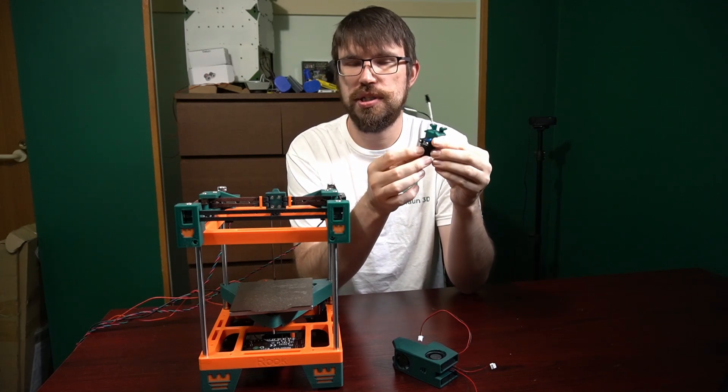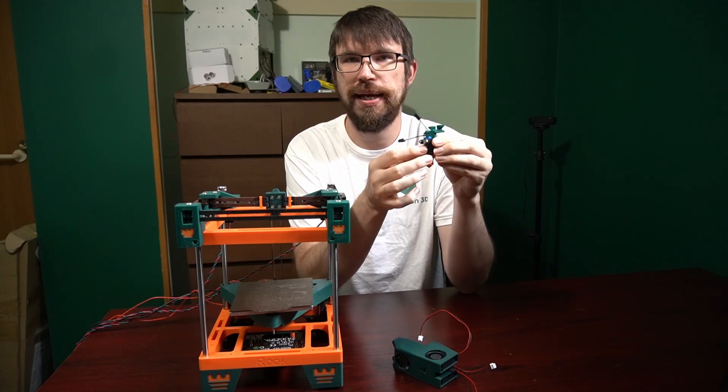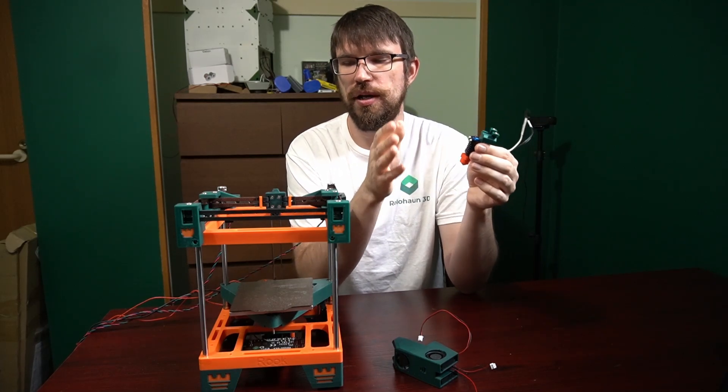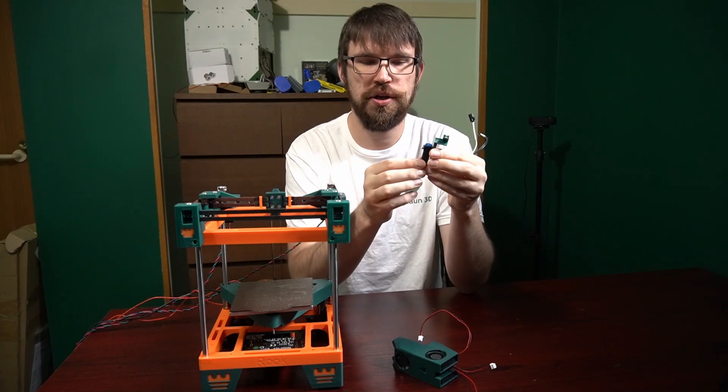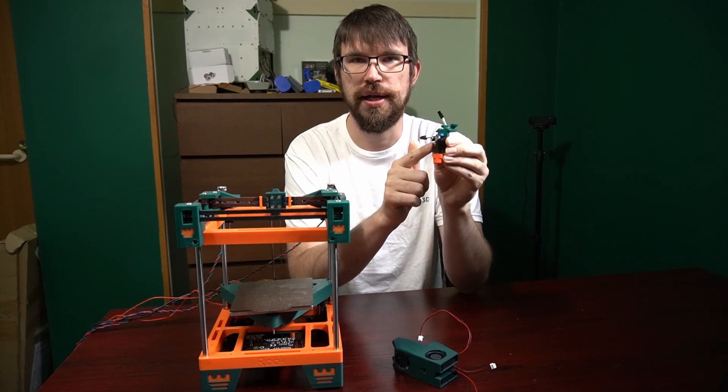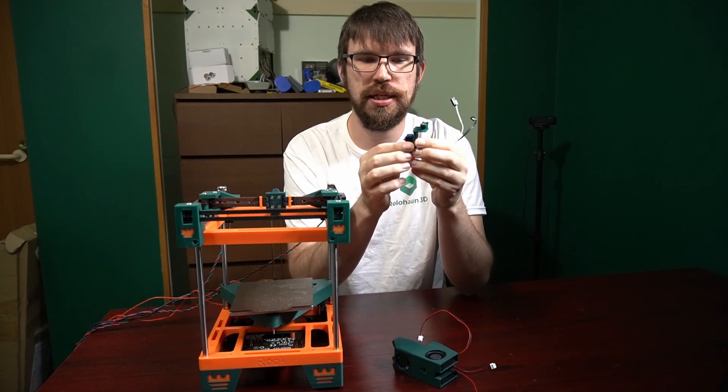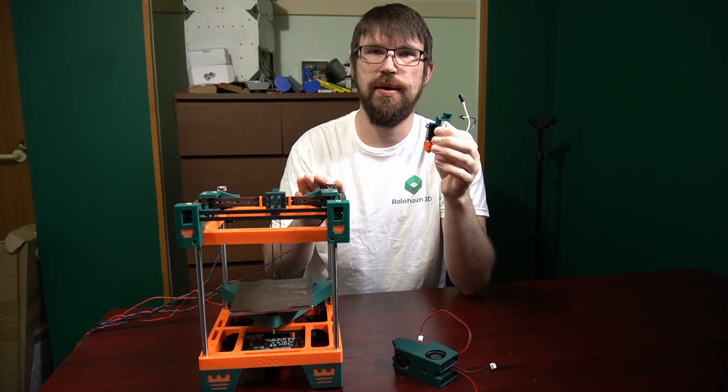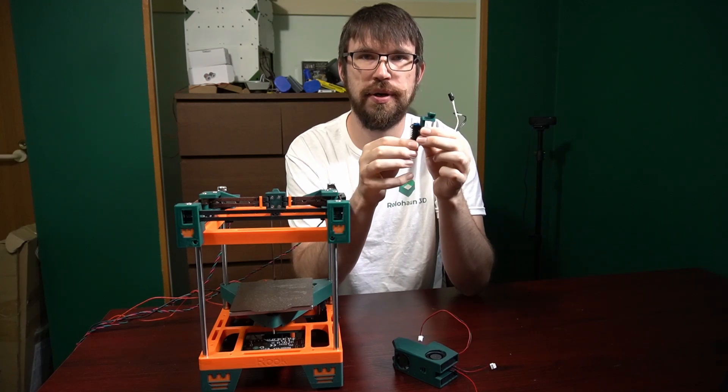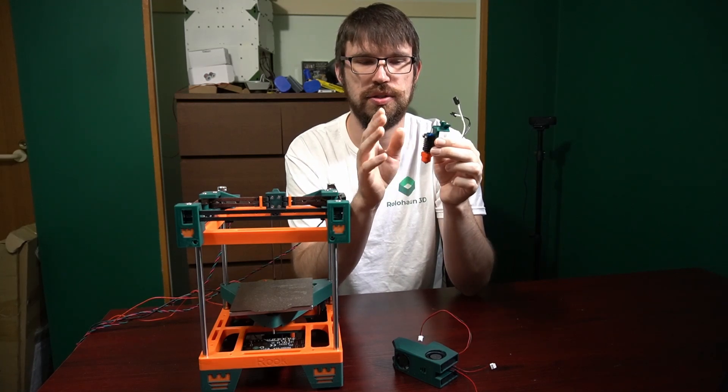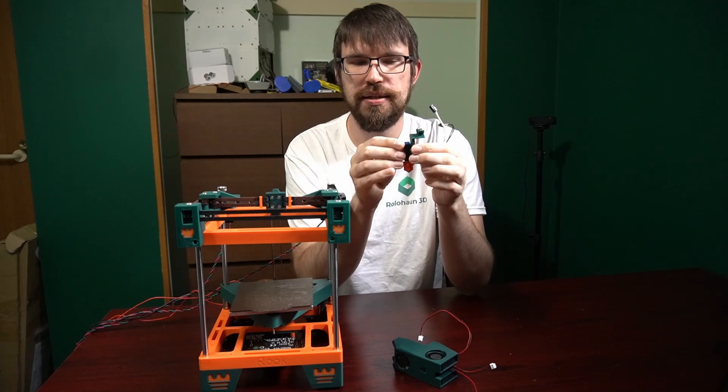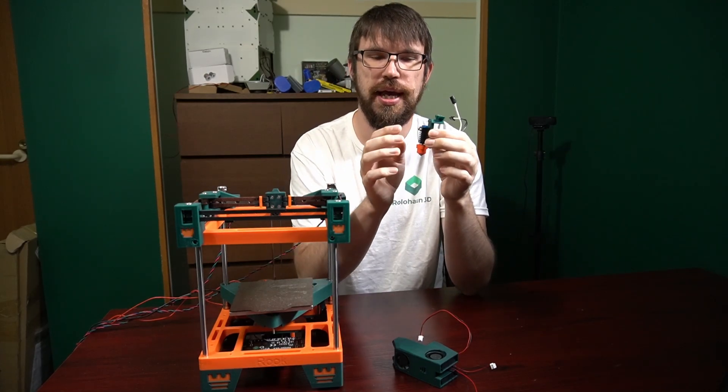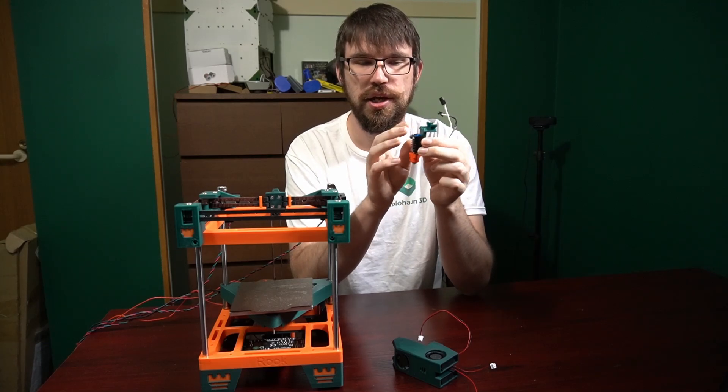Now this is very important that you get the right key for your build. If you are using a Fabrico kit like this or you're using a CR-10 hot end, you're actually going to be using the key that is on the Printables for the Rook MK1. This has the correct height for a CR-10 hot end. So again, Fabrico kits or if you're buying parts from the bill of materials and you're using a CR-10 hot end, you want the key that's on the Rook MK1 Printables.